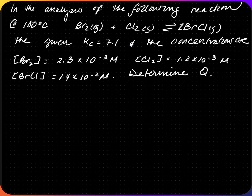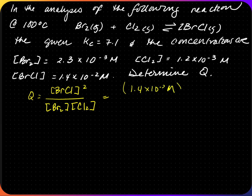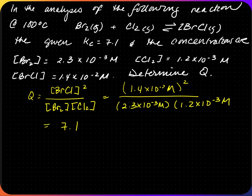For the following reaction, Br2 + Cl2 → 2BrCl, with Kc = 7.1. Q = [BrCl]² / ([Br2][Cl2]). BrCl is 1.4×10⁻² M (squared), Br2 is 2.3×10⁻³ M, and Cl2 is 1.2×10⁻³ M. Q calculates to 7.1. Since Q equals K, the system is already at equilibrium and there will be no shift.